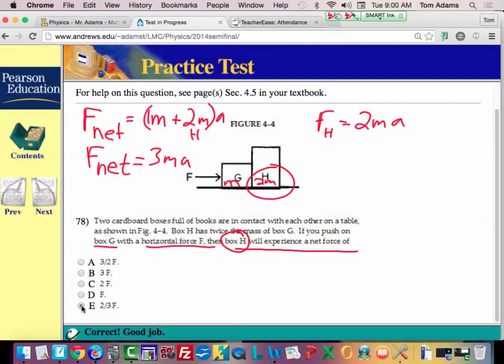Does that make sense? In other words, this is 2 thirds of this, right? Does that make sense?